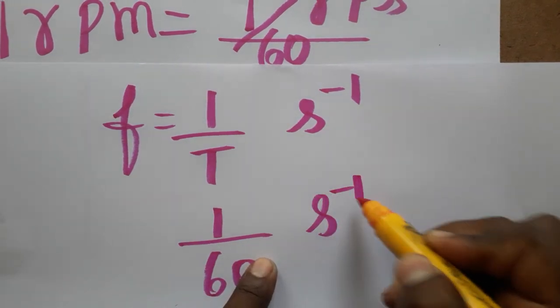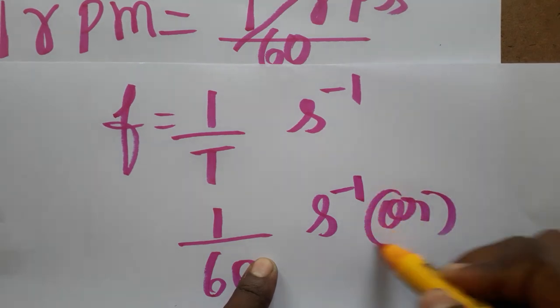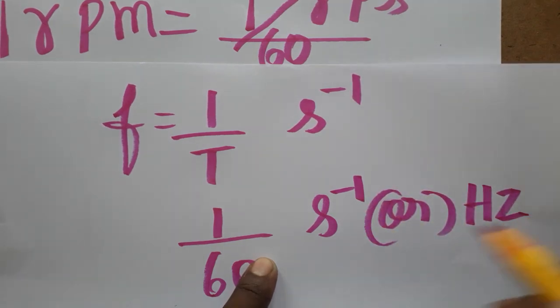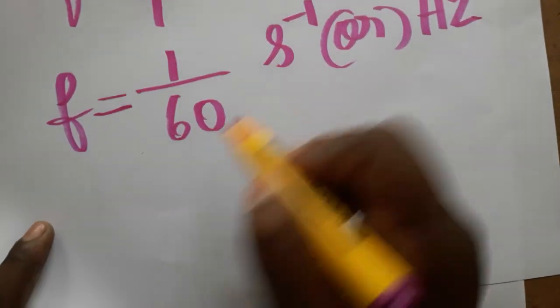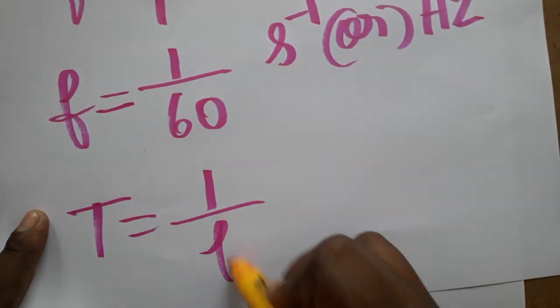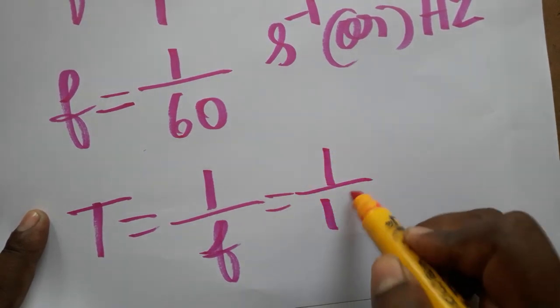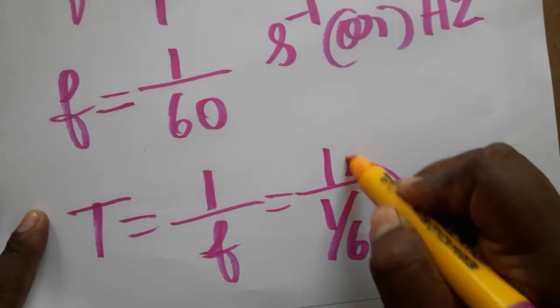So frequency is 1 by 60. What about the time period? Time period is equal to 1 by frequency, which is 1 divided by 1 by 60. This directly goes to the numerator, so 60.